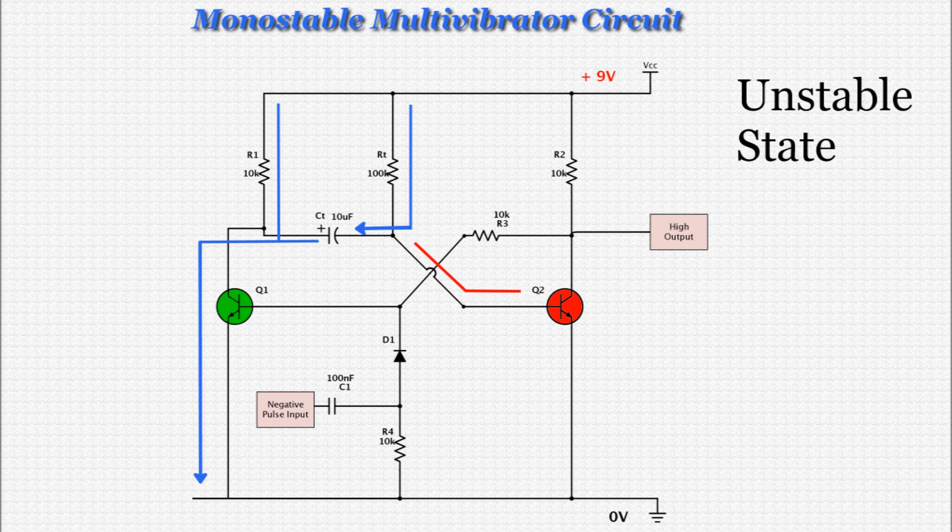This is the circuit's second unstable state. Because Q2 is now off, current now flows through R2 to the output, supplying the timed pulse, and through R3 to the base of Q1, keeping it turned on. The LED at the output lights up.